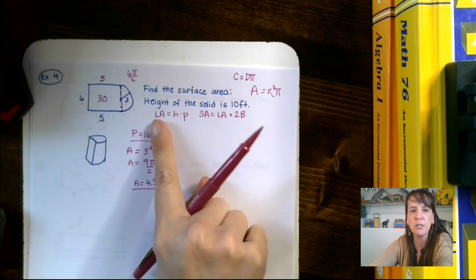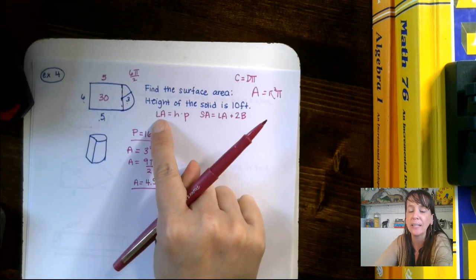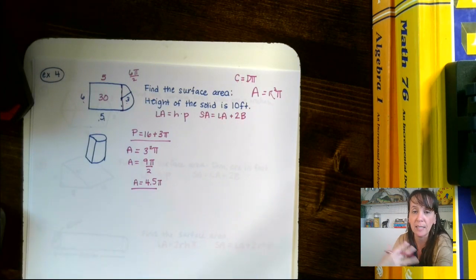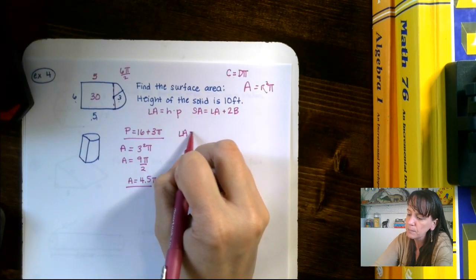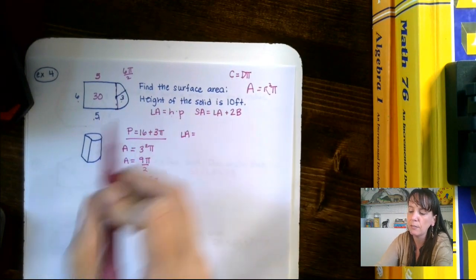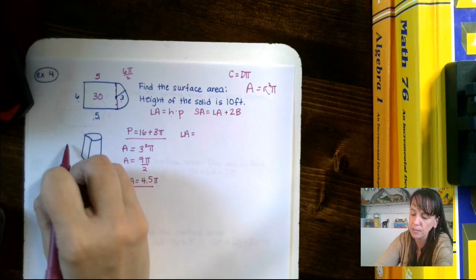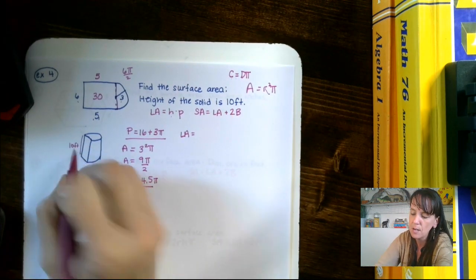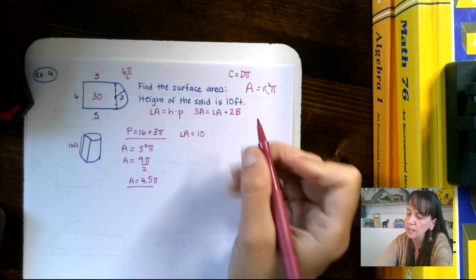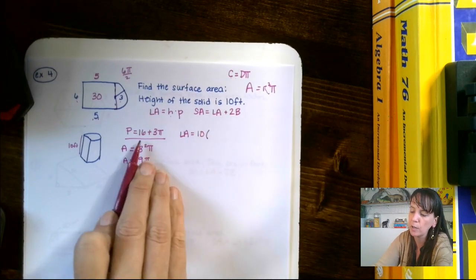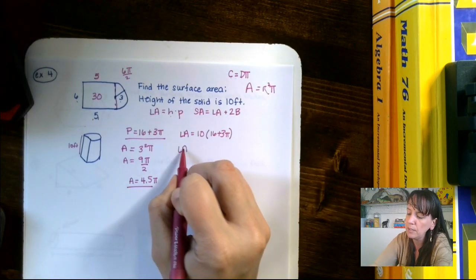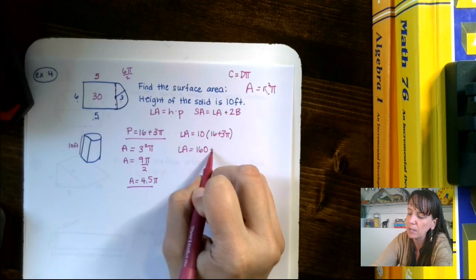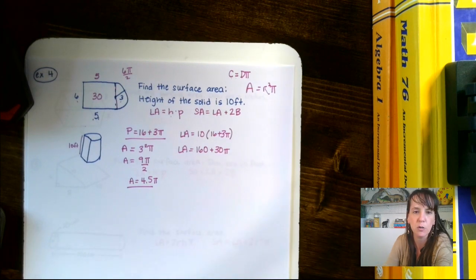Now for the lateral area — like the label on a soup can, everything not including the top and bottom bases. Our lateral area is the height of the figure times the perimeter of the base. The height is 10 feet, and the perimeter we already know is 16 plus 3 pi. Using the distributive property, that gives us 160 plus 30 pi.